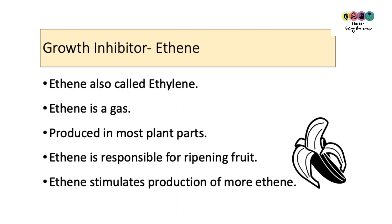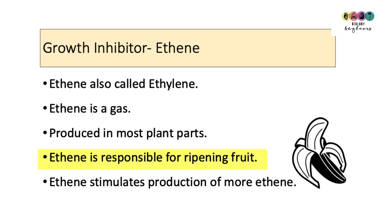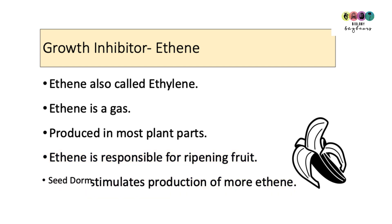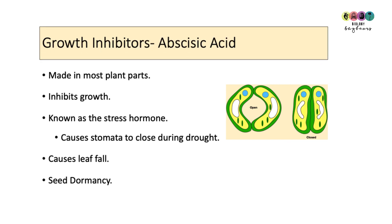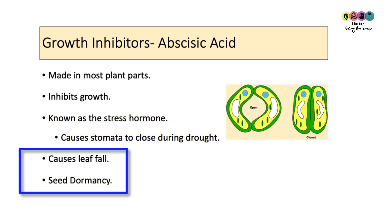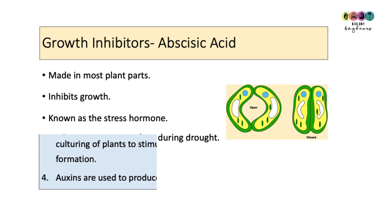Ethene or ethylene is a growth inhibitor — very unusual because it's a gas. It's produced in most parts of the plant and is responsible for ripening fruit; once some ethene is produced, it stimulates the production of more ethene. Abscisic acid is the other growth inhibitor, made in most parts of the plant. It's known as the stress hormone because it causes stomata to close in drought, causes leaf fall, and is associated with seed dormancy.